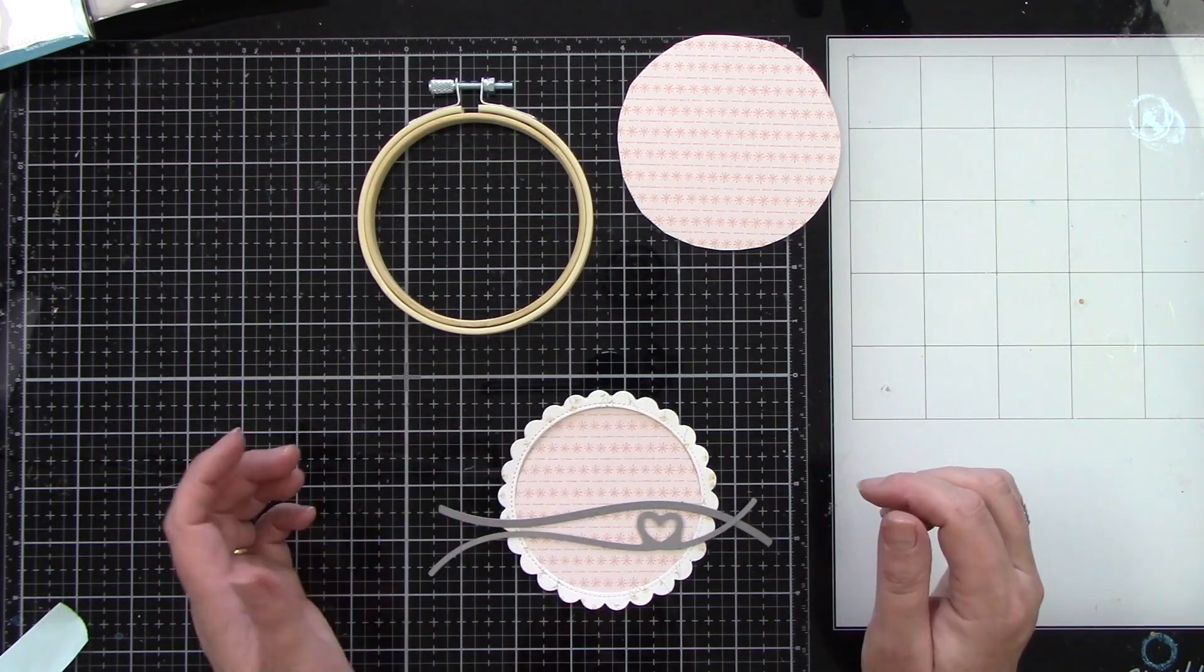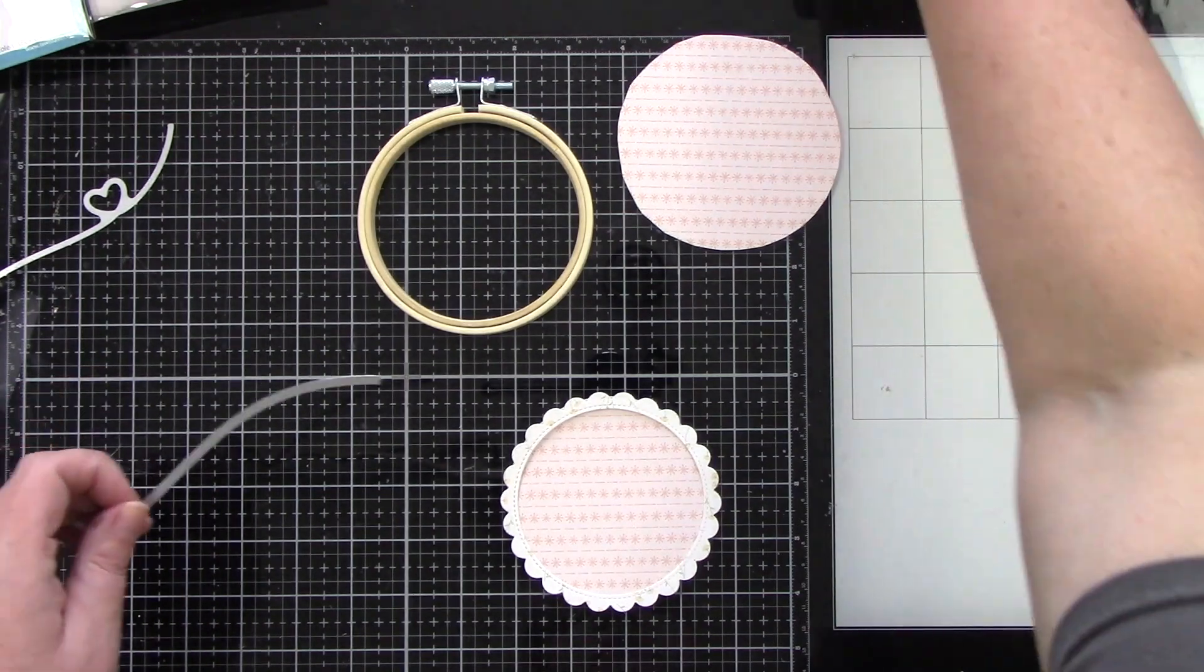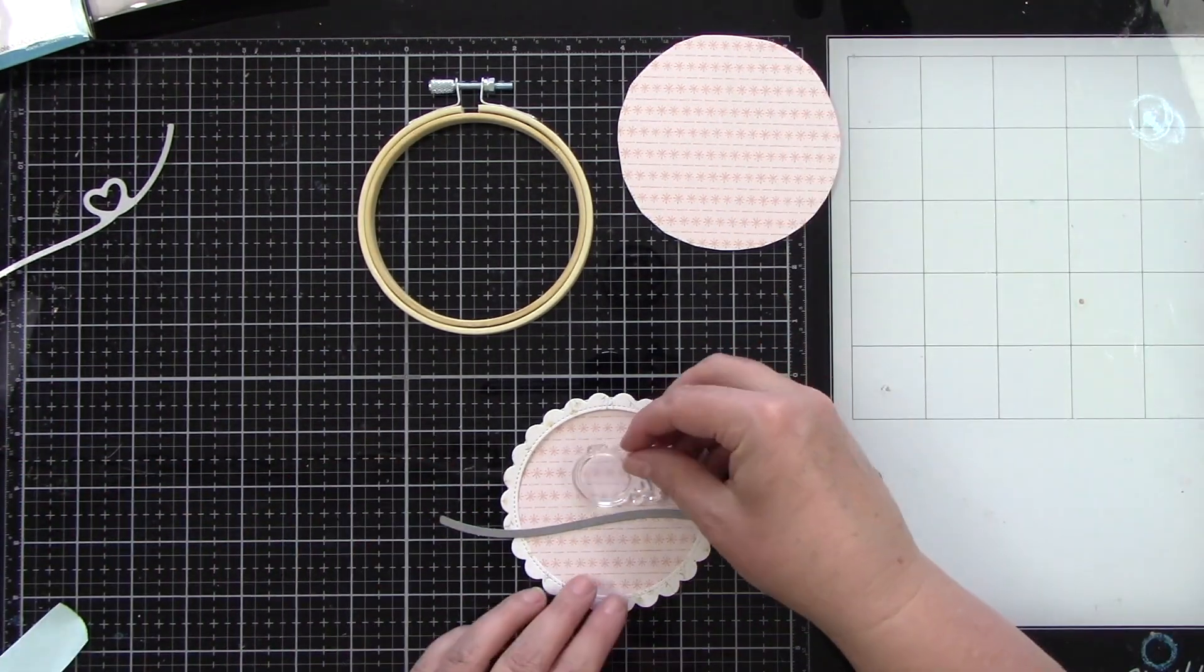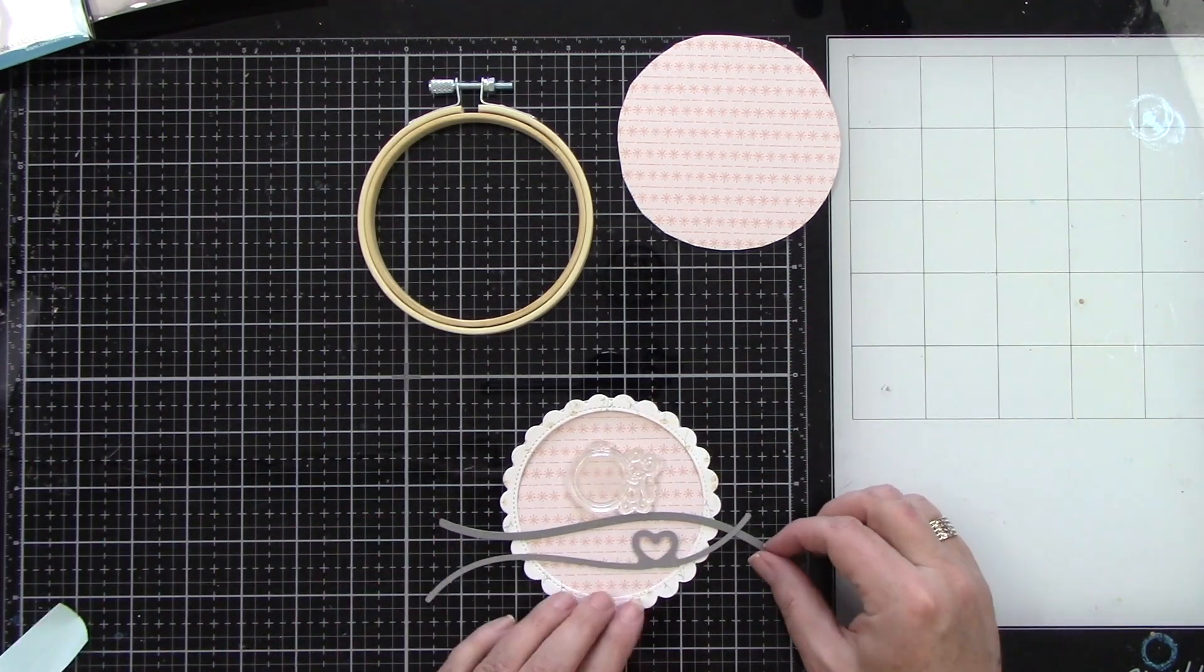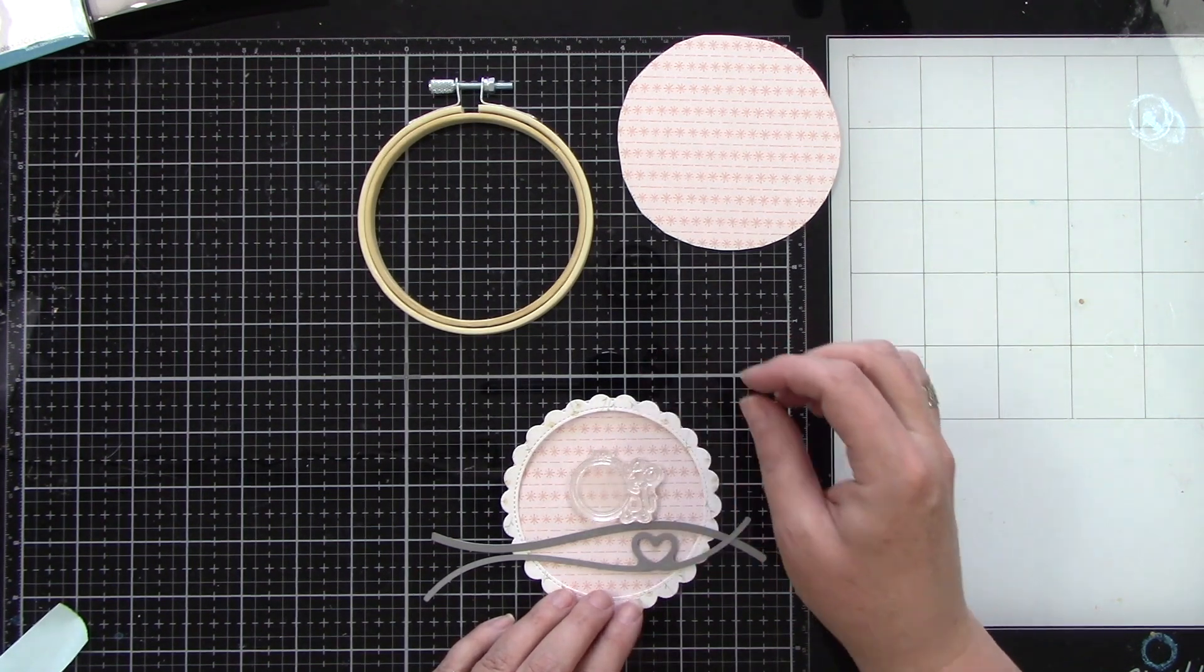I am using the stitched hillside border and the stitched trails as well so all of this has stitching on it which of course is so perfect for this little gift. This was also inspired by Kelly Person who created great Christmas tags using these embroidery hoops.